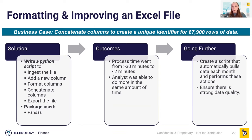As a result of this effort, the processing time went from more than 30 minutes — probably more than a couple of hours — to less than two minutes. That meant this analyst was able to do more work in the same amount of time and probably be much happier. Going further, one option was to create a script that reaches for the data each month, performs this calculation, and spits out a report. Another was to ensure strong data quality by checking for double unique identifiers.